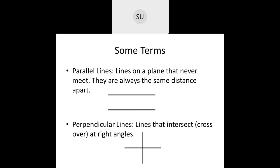Then we saw the types of lines. We have straight lines and curved lines. Among straight lines, we have a horizontal line, which is also called a sleeping line; a vertical line, which is a standing line; and a slanting line, which is neither horizontal nor vertical.